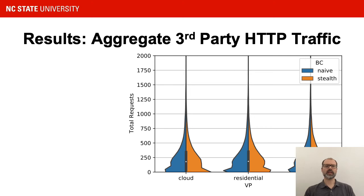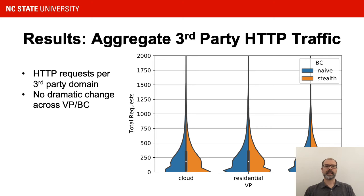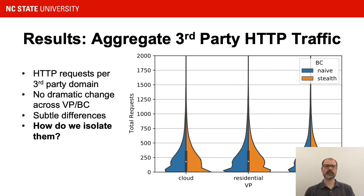If we look at all HTTP requests to third-party domains and plot those distributions across each of our realism factors, we do not see dramatic obvious high-level differences, but we do see some subtle differences in the curves and the plots. This raises a question of how we can analyze what is causing those differences, find these outliers, and determine whether they are interesting or significant.